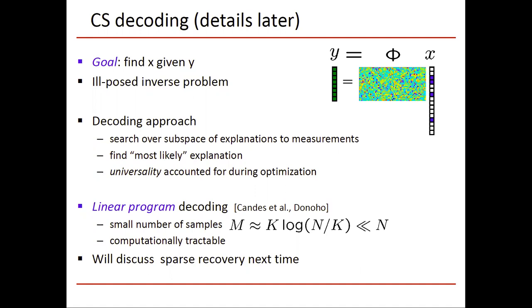We search over all the possible explanations, all the possible sparse explanations to measurements. We find the most likely one, because there can be different probabilistic measures or geometrical measures of likelihood. The universality that I mentioned earlier, that any structure that we could be sparse in can be incorporated, that universality is accounted for during the optimization routine.